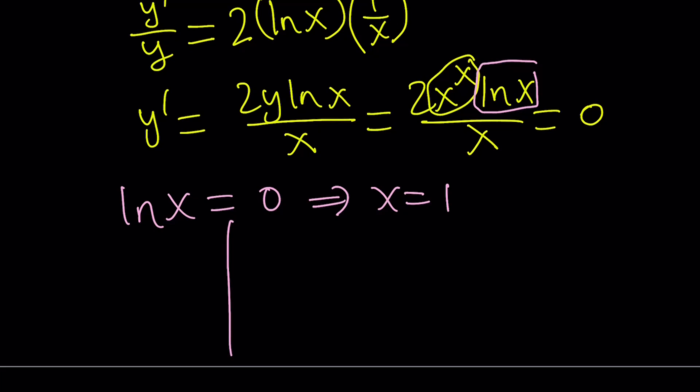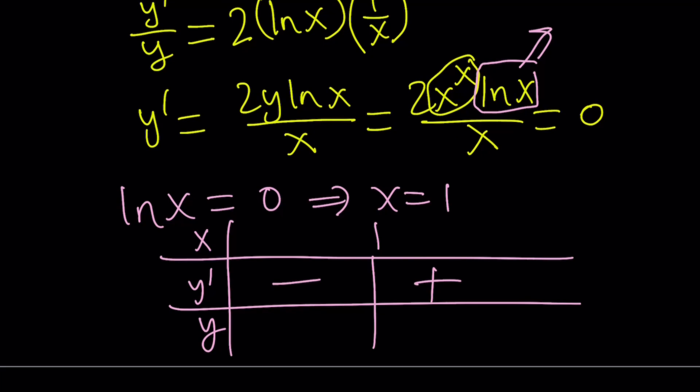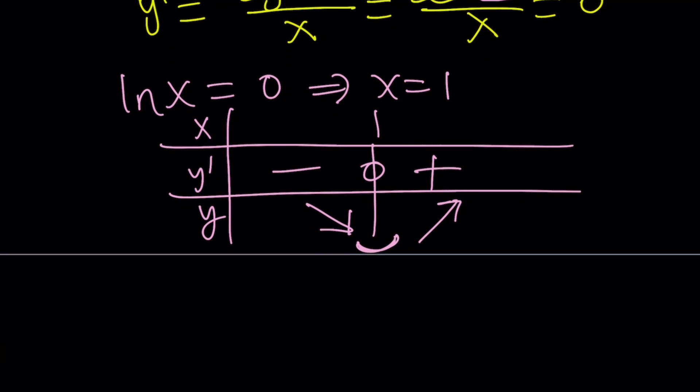At x equals 1, here's what happens. Let's go ahead and make a quick table: x, y prime, and y. And 1 is critical. And notice that if x is greater than 1 here, the derivative is going to be positive. Because pretty much everything else is positive. So, we're going to get a plus sign and a minus sign. Which means our function is decreasing and then increasing. Which means it is going to have a minimum at 1.